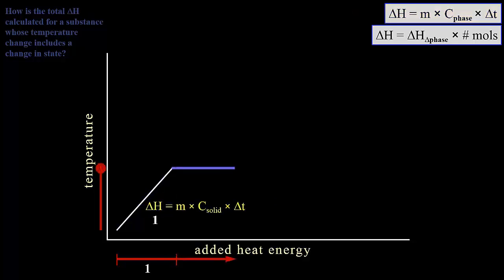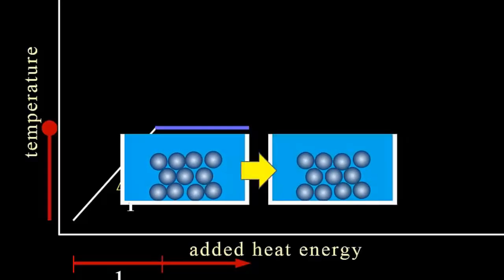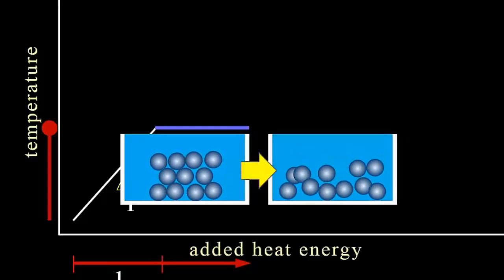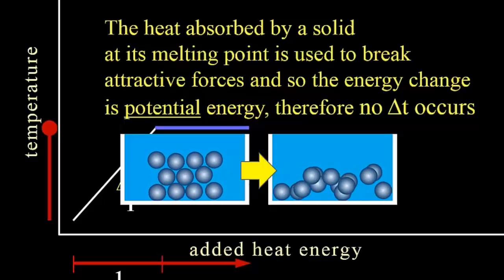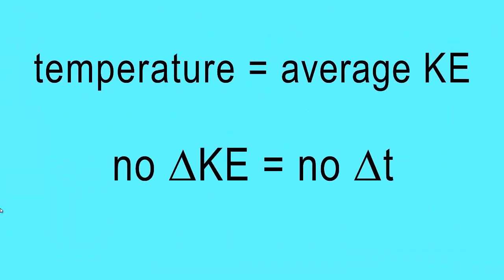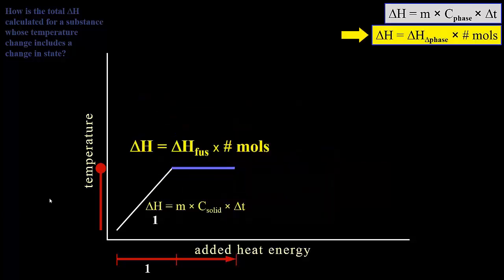When adding more heat energy at the melting point, something interesting happens — no temperature change occurs. If we look at what is happening during melting, we see that energy is used to break attractive forces between particles. This results in a positional change in the particles, and therefore it is a change in potential energy. Without a change in kinetic energy, there will be no change in temperature. The absorbed heat is converted to potential energy, so no delta T. Here we require the second equation using the substance's heat of fusion for our second delta H.